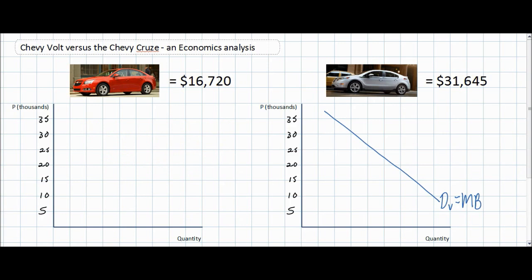Here we've drawn the demand for Chevy Volt labeled DV, which corresponds with the marginal benefit of Chevy Volt consumers. Let's compare this to the demand and the marginal benefit for Chevy Cruze consumers. I'm going to draw a demand curve further to the left in our Chevy Cruze diagram than the one I drew in the Chevy Volt diagram.